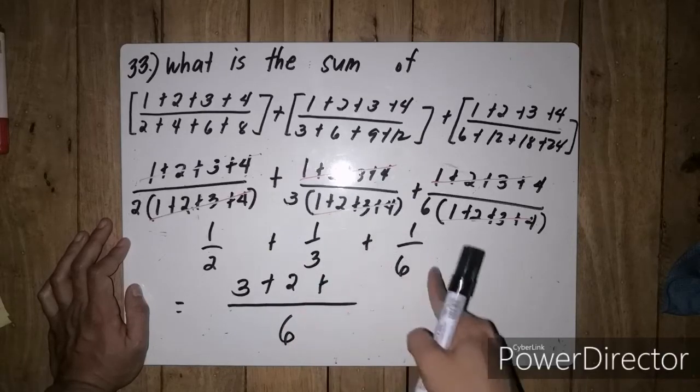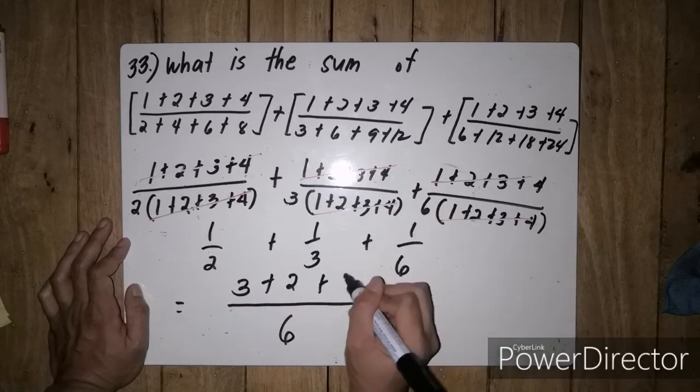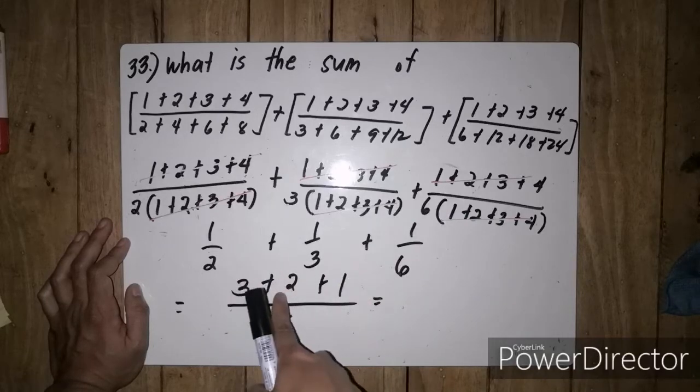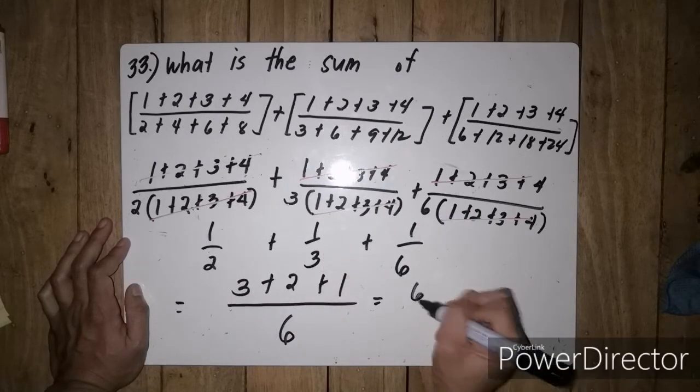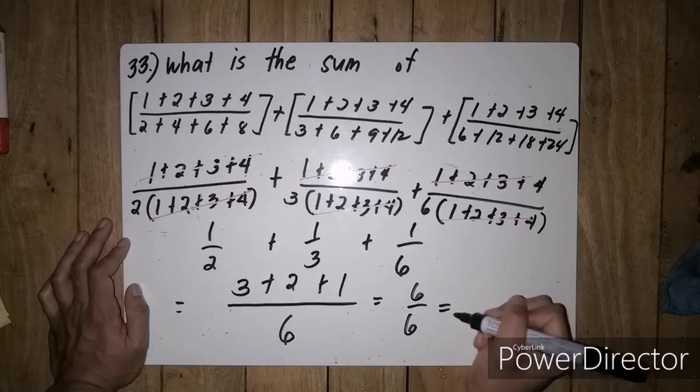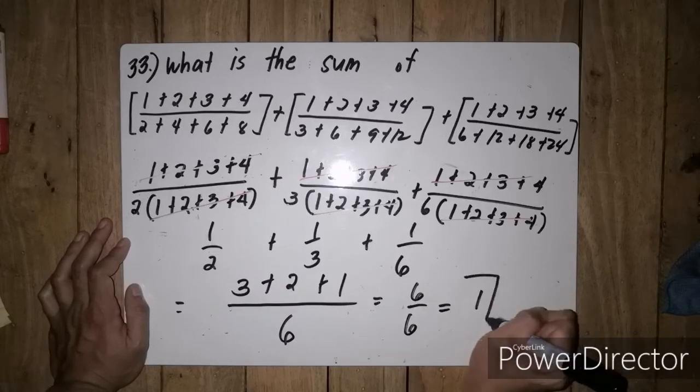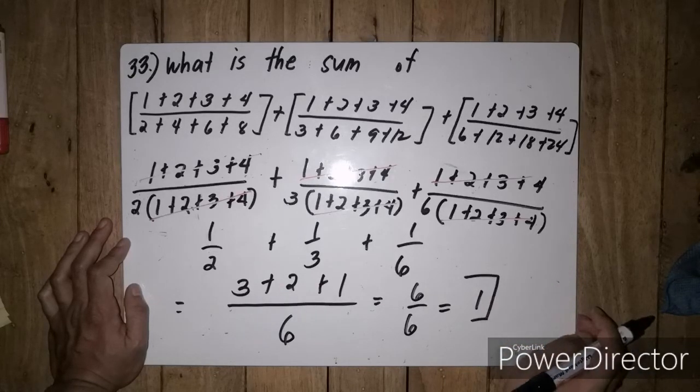6 divided by 2 is 3 times 1 is 3, plus 6 divided by 3 is 2 times 1 is 2, plus 6 divided by 6 is 1 times 1 is 1. So we have 3 plus 2 plus 1 equals 6 divided by 6, which equals 1. Our answer for this problem is 1.